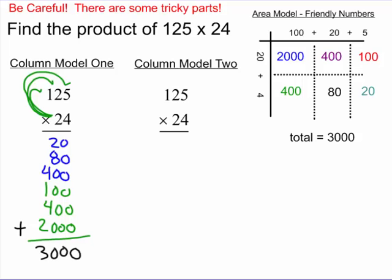Now again, I'm going to do column model number two. And I'm going to say it the way people try to explain multiplication. And this is why this model can be a little confusing. So here's what it sounds like. 4 times 5 is 20. I carry the 2. 4 times 2 is 8. Plus 2 more is 10. Carry the 1. 4 times 1 is 4. Plus 1 more is 500.